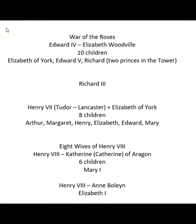His father was the illegitimate half-brother of one of the previous kings. So in order to shore that up, Henry VII will marry the eldest daughter of the previous king, Edward IV. Henry VII marries Elizabeth of York, and the two of them produce a number of children together.